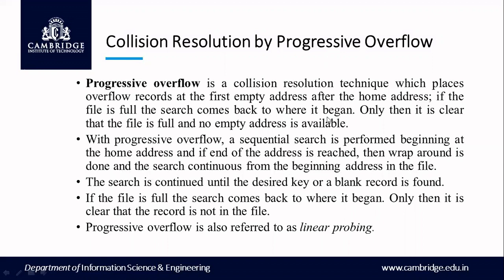The search will wrap around and come back to the place where it started — address 20 — and then wrap around again to start from the beginning of the file. The search continues until the desired key or a blank record is found. If the file is full, the search comes back to where it began, and only then is it clear that the record is not in the file. Progressive overflow is also called linear probing because it is done in a linear fashion, one after the other.